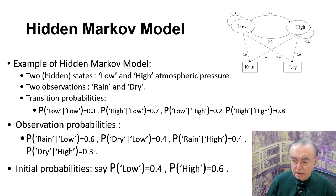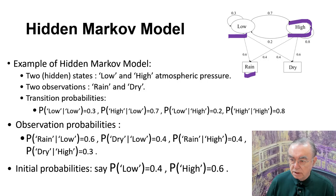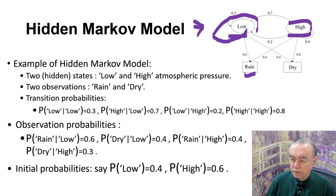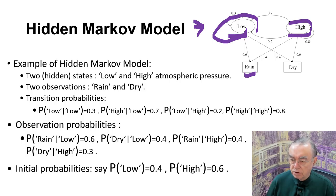Actually, maybe that's not the right thing to do, because maybe what's important is not rain or dry, but actually the nature of the weather system — whether there's a low pressure system or a high pressure system. These are latent variables, these are hidden variables. If you have hidden variables — low or high — with transition probabilities, you can make a statistical study of those. And those should also transform into raining or dry observations with certain probabilities.